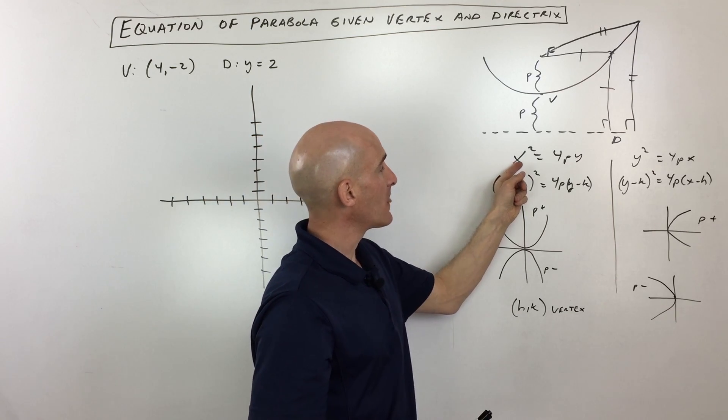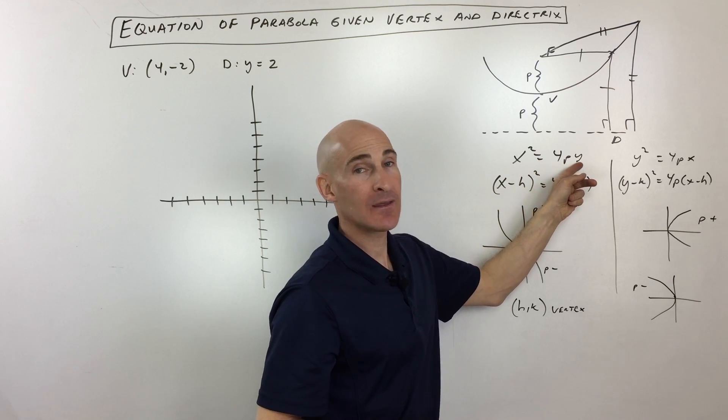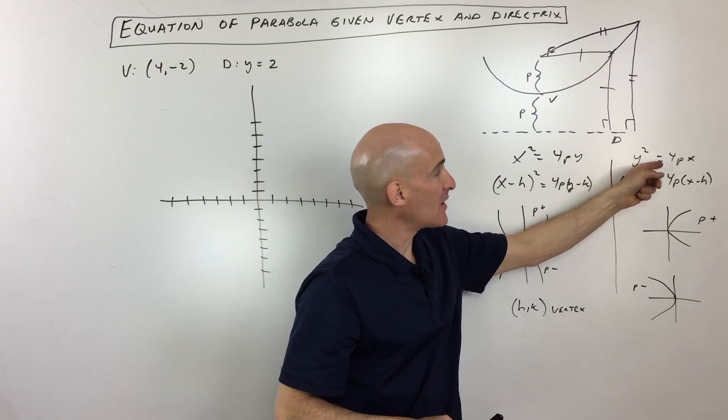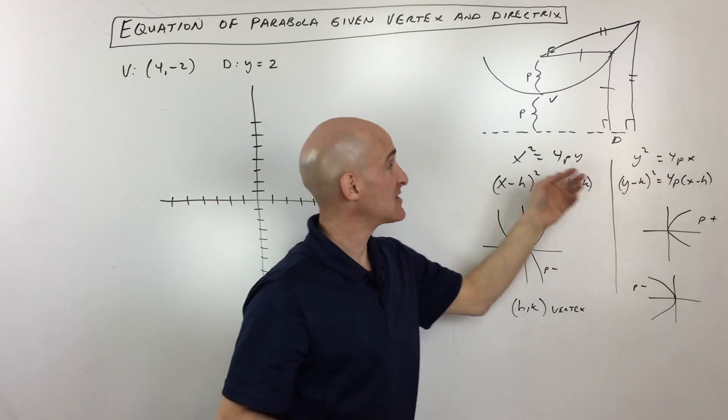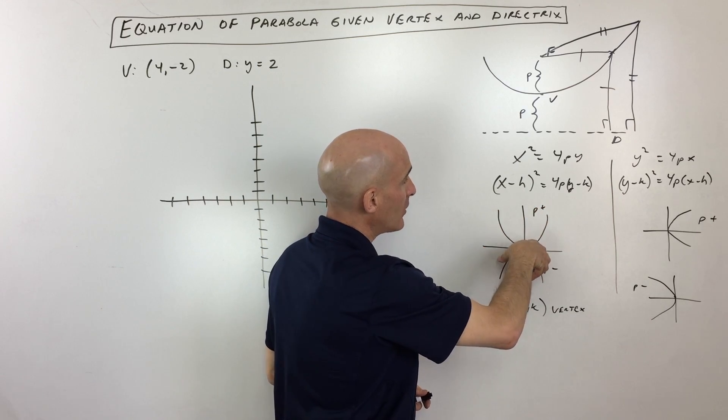As far as the equation, it's either going to be an x-squared variety, like x-squared equals 4py, or what I call a y-squared variety, which is y-squared equals 4px. And if it's the x-squared term, if the x is the term that's squared, it opens up or down.